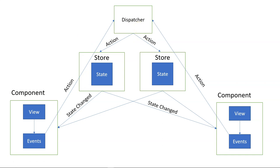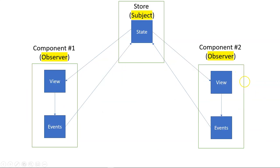The dispatcher publishes messages — actions — to the stores. Each store receives the action and decides whether to process it or not. Then the store notifies the state change to the components and the component view gets updated. The Flux architecture is nothing but two levels of observer pattern. Last time I implemented the first level, and today I'm going to implement the second level.